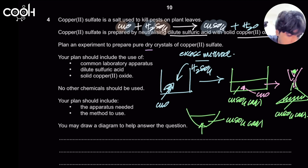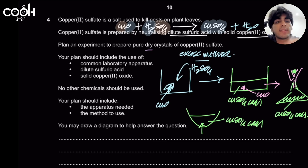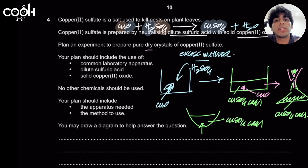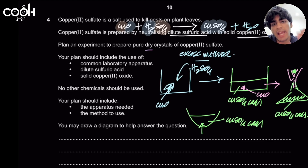Since we're dealing with solid copper oxide, we also want to maximize the rate of reaction. When adding copper oxide and sulfuric acid together in a beaker, make sure to stir and warm the mixture. Stirring breaks down the copper oxide into smaller chunks, increasing the surface area and therefore increasing the rate of reaction, so they react thoroughly.